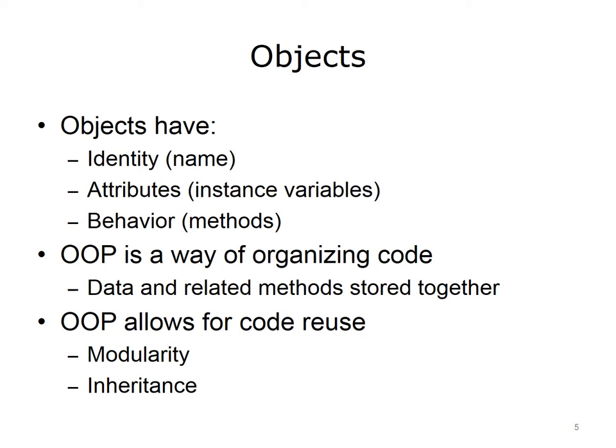Objects in programs have data associated with them, called instance variables. Finally, objects have behavior. Behavior means the things that objects can do. Most people do not necessarily think that a chair has behavior, but it does — it supports the person sitting in it. Similarly, objects in programs have behavior. These are the methods that are defined for the object.